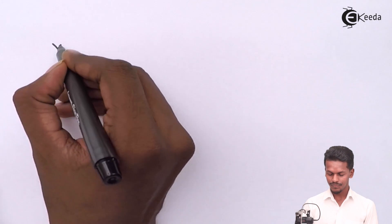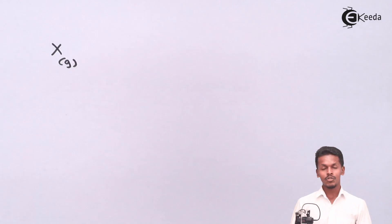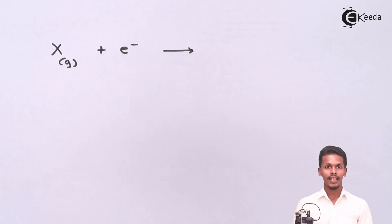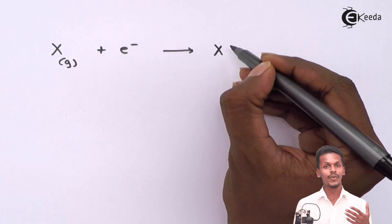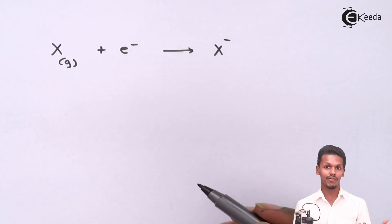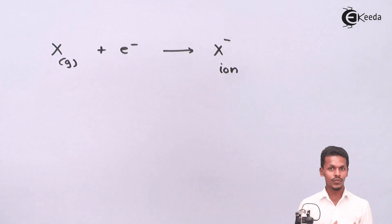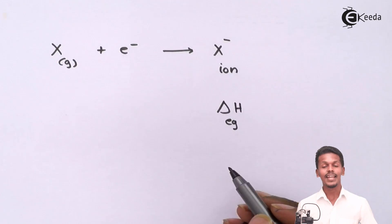For example, if we have a neutral gaseous atom X, it does not carry any extra positive or negative charge. If we add an electron to this atom, it will convert into an ion carrying a negative charge. The change in enthalpy observed because of this gain of electron is known as the electron gain enthalpy.